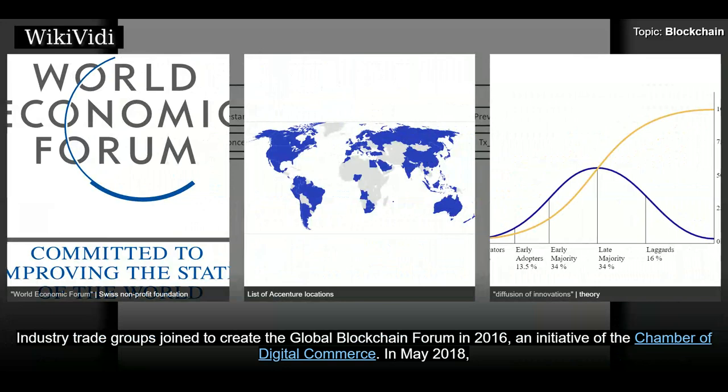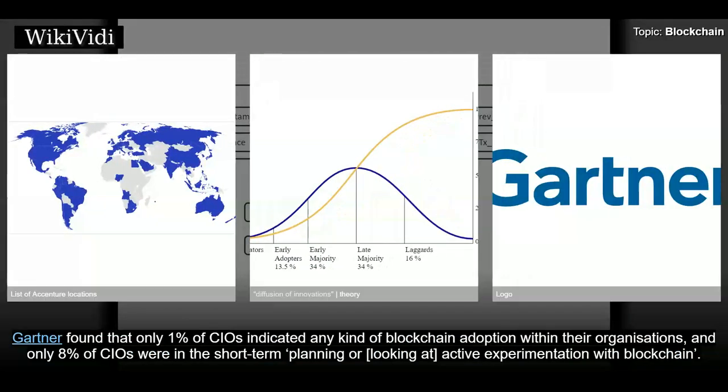In May 2018, Gartner found that only 1% of CIOs indicated any kind of blockchain adoption within their organizations, and only 8% of CIOs were in the short-term planning or actively experimenting with blockchain structure.